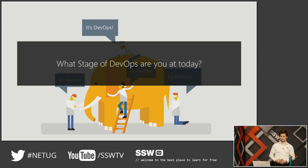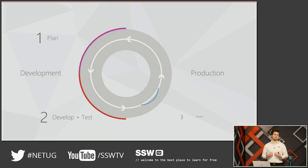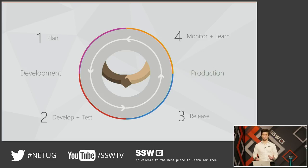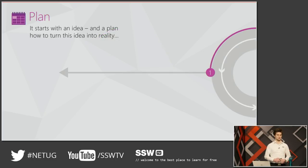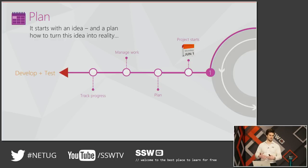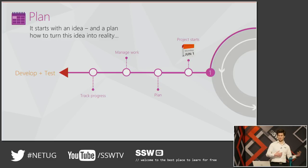Now we can go through a few stages of DevOps. What stage of DevOps are you at today? There are like four categories, and inside people are doing some things from that category, not everything. When you start a new project you normally get some requirements, then you plan the work and manage it. You're using tools like VSTS, work items, or JIRA, or Raleigh, and you track your progress as you go.